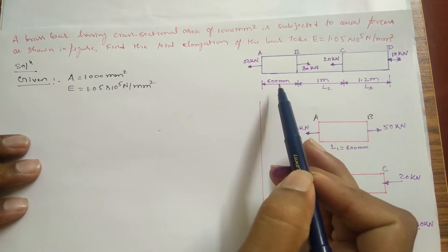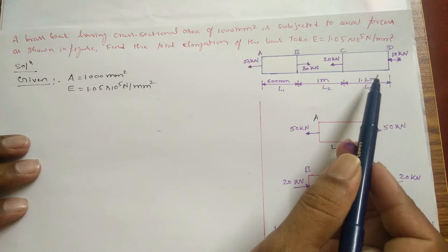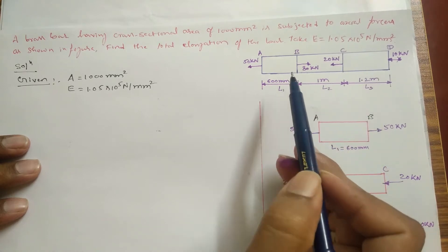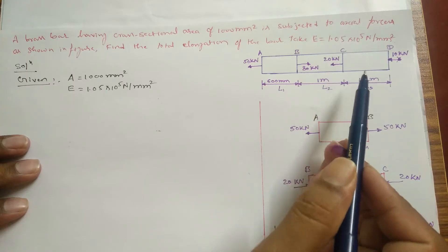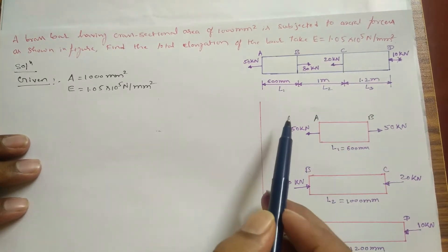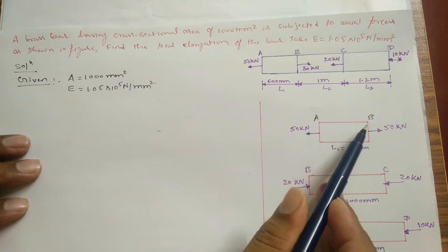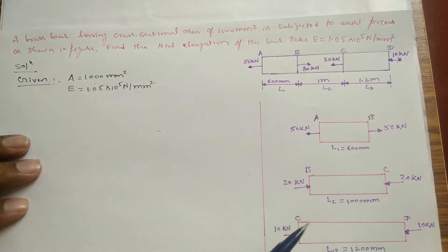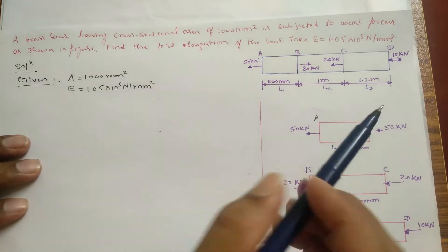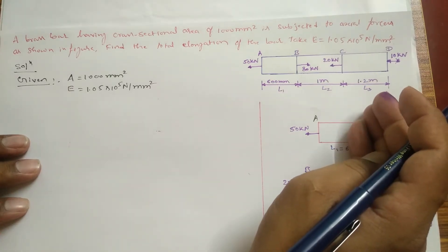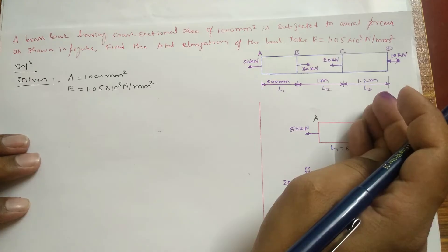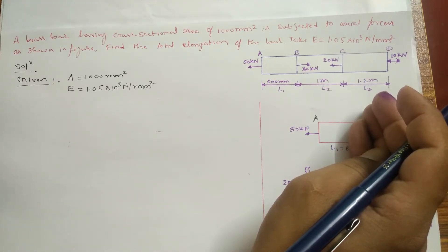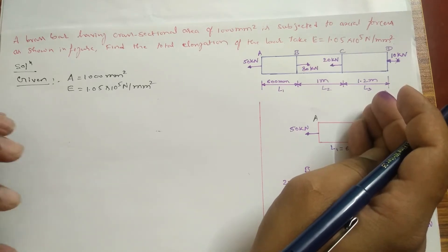For simplification, this single bar is going to be divided into three blocks: block AB, block BC, and block CD. We have to write the loads on each block and their direction, which will make it easy to solve the problem.